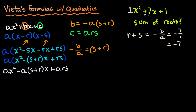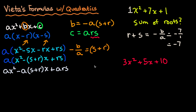Now let's try a different polynomial with a different leading coefficient: 3x squared plus 5x plus 10. This time, let's find the product of the roots. The product of the roots rs appears directly in our expression: c equals ars. So dividing both sides by a, we get rs equals c over a.